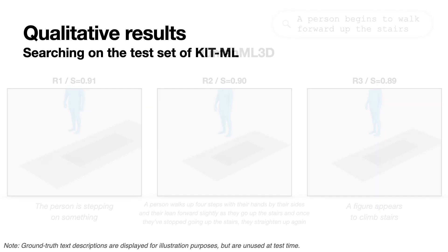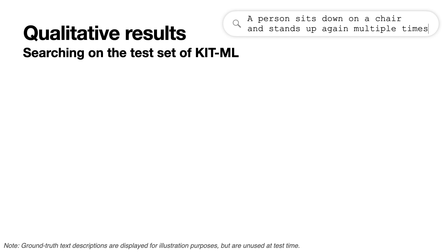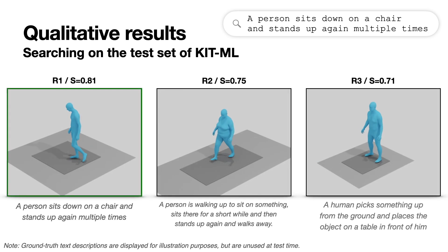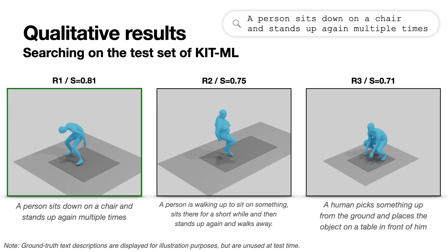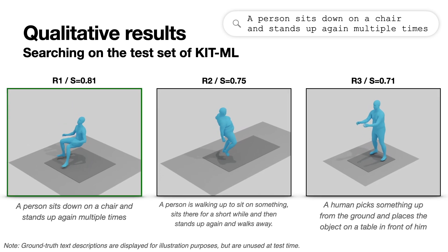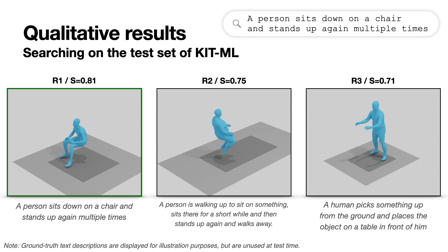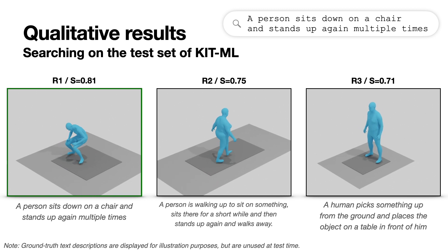Let's look at the KIT motion language dataset and the text 'a person sits down on a chair and stands up again multiple times.' Our model is able to correctly find the exact motion sequence and also find other instances of sitting.